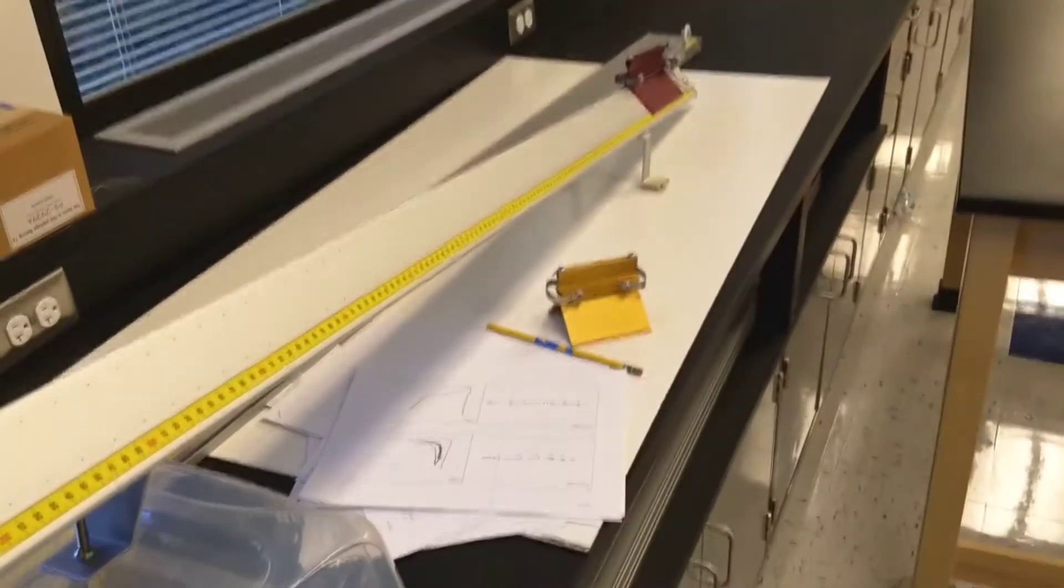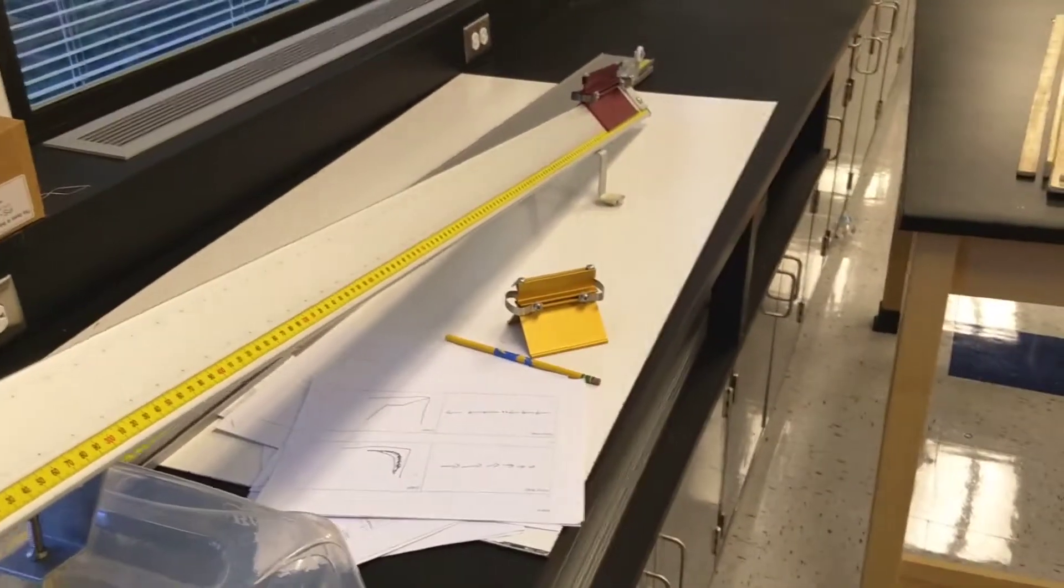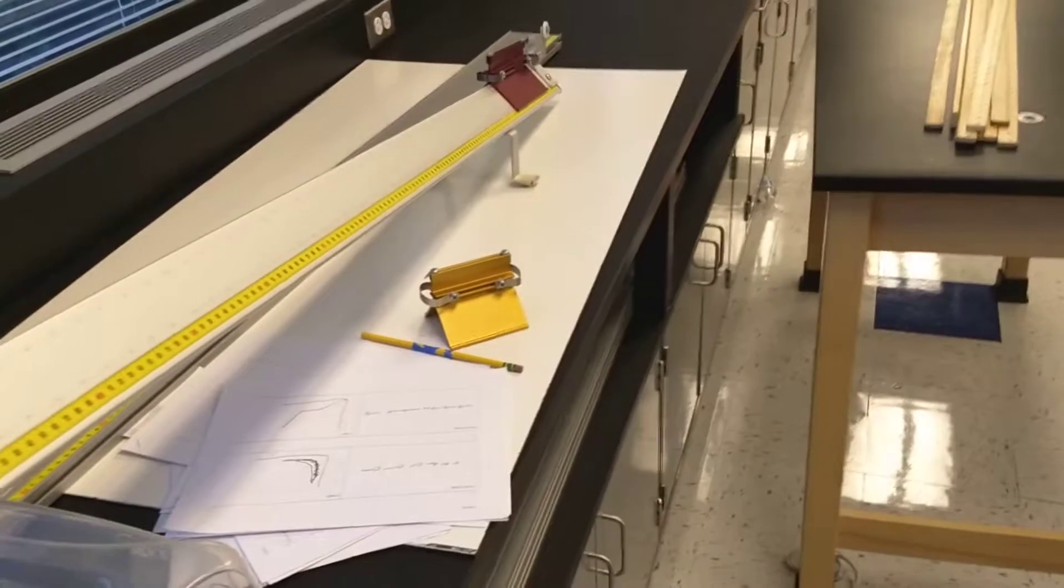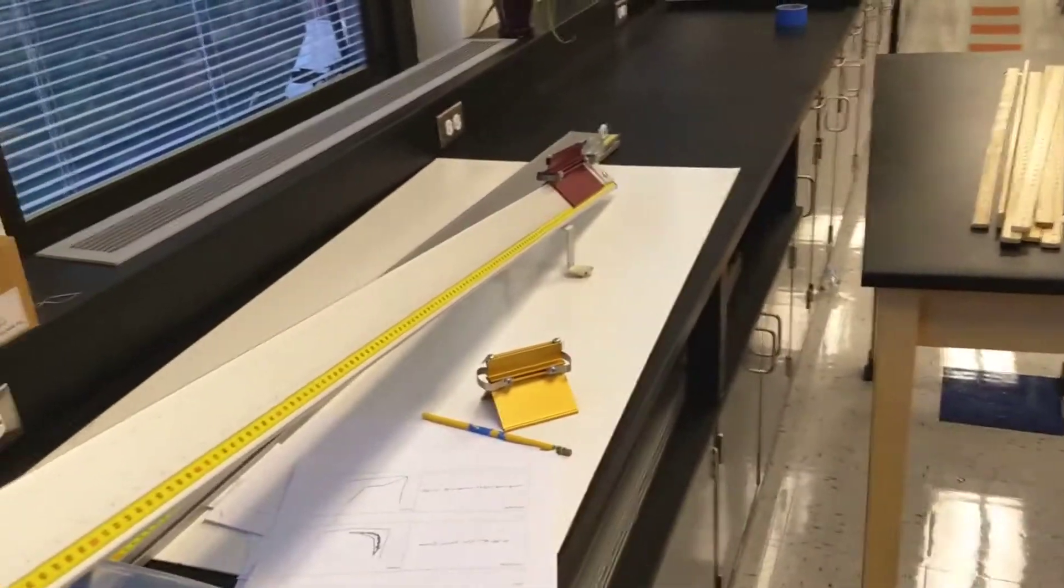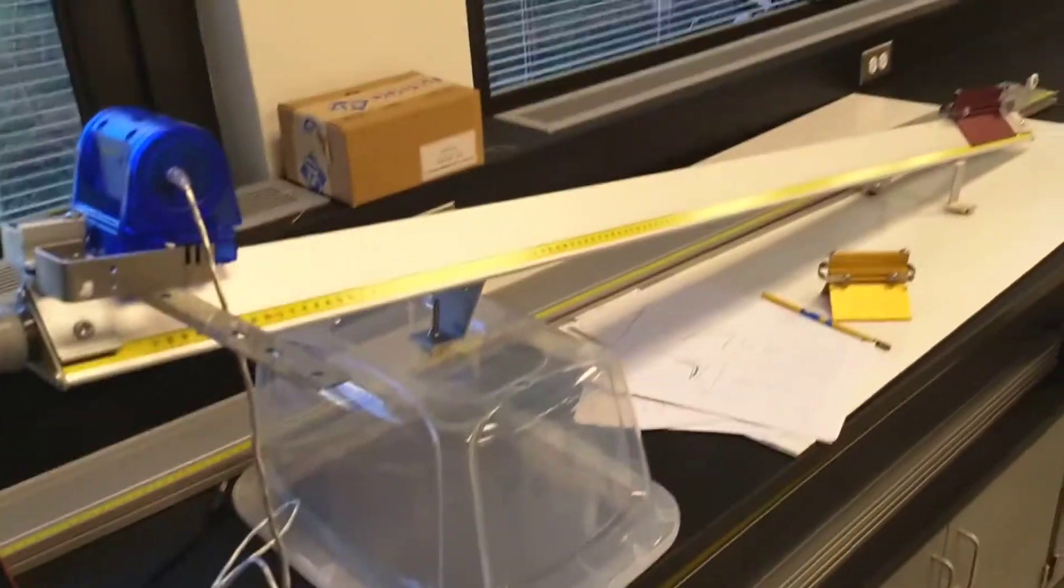Try to figure out what those graphs would look like based off your velocity versus time graph. It's definitely not the easiest thing to do, but try to do a prediction and then test it out with your motion detectors.